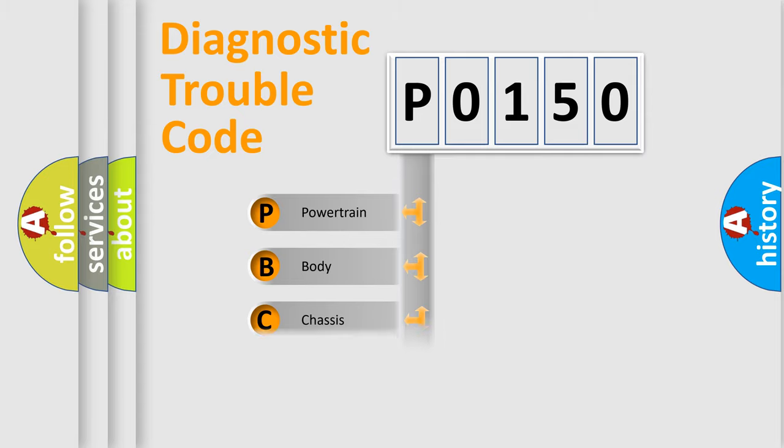Powertrain, Body, Chassis, Network. This distribution is defined in the first character code.